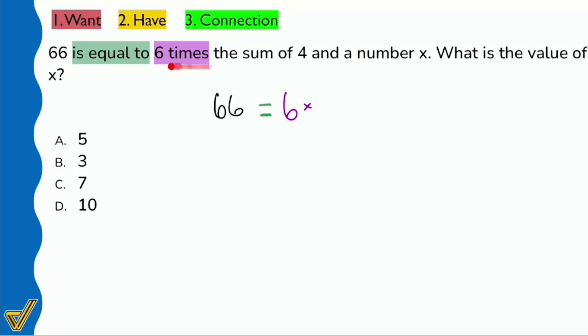It says six times the sum, so we need to find whatever this sum is and then multiply that by six. We're not just going to multiply six by whatever we want. It's six multiplied by whatever these numbers are added together.